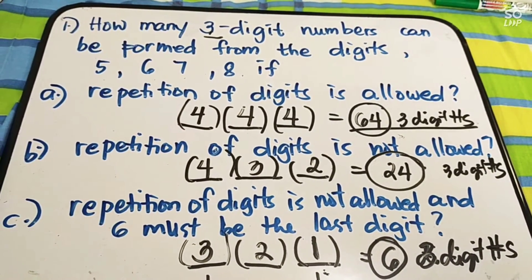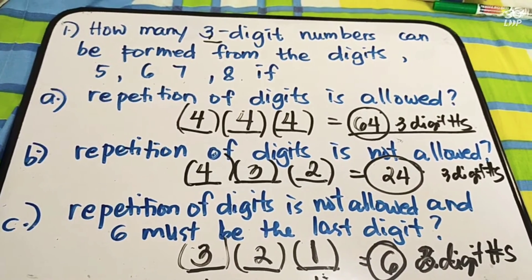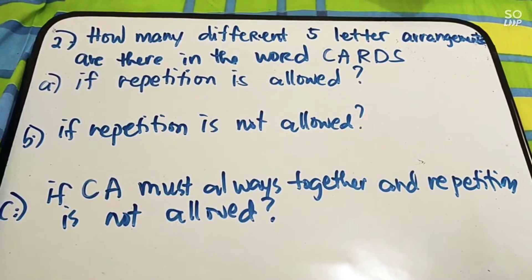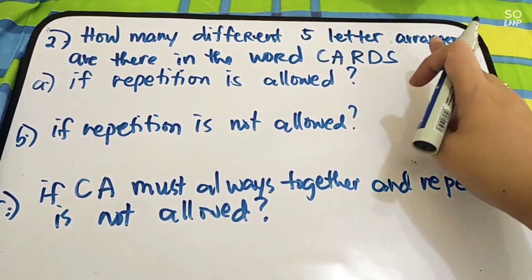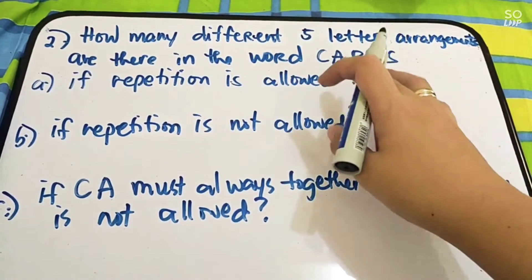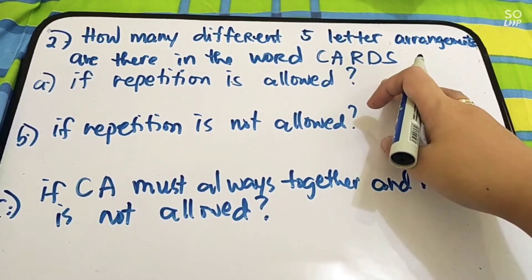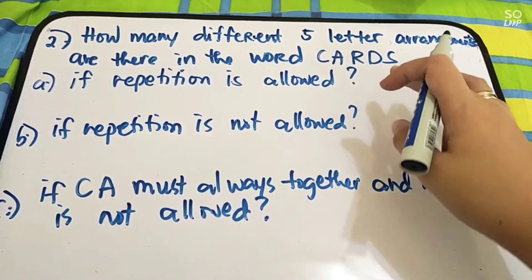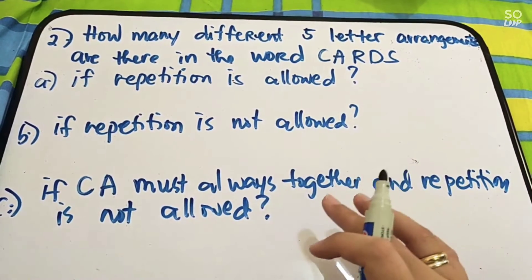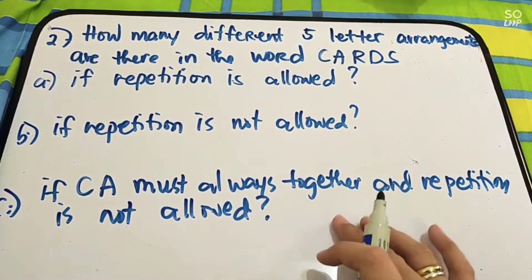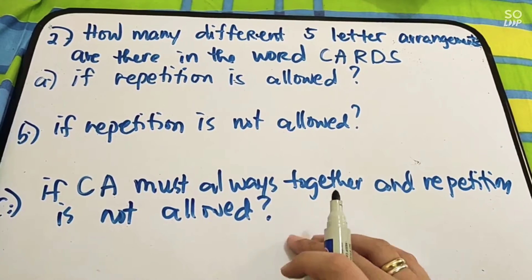Is it clear? That is it. Let's have another example — number two: how many different five-letter arrangements are there in the word CARDS? Letter A, if repetition is allowed. Letter B, if repetition is not allowed. Letter C, if CA must always be together and repetition is not allowed.